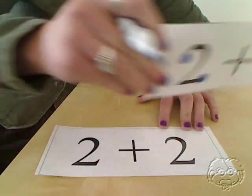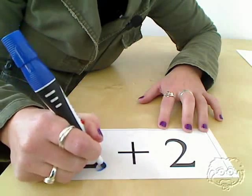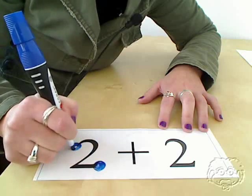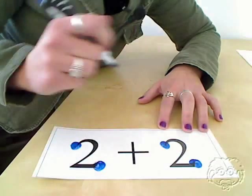Here's another example. 2 plus 2. Let's put our dots on there. 2 dots on each number because the number is 2.